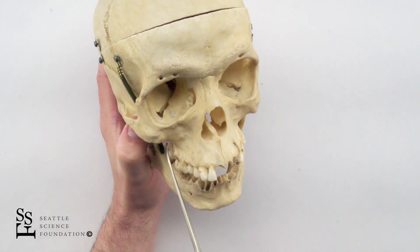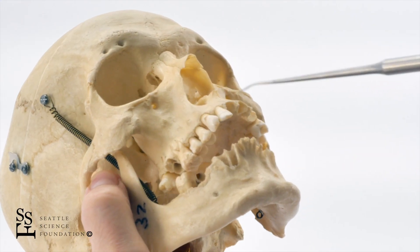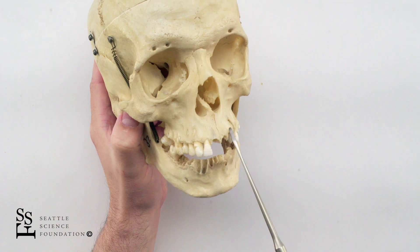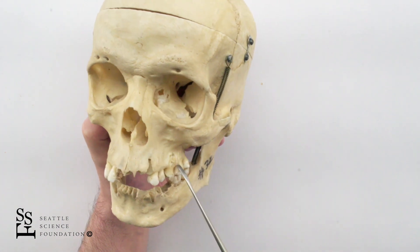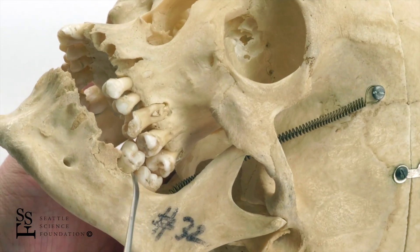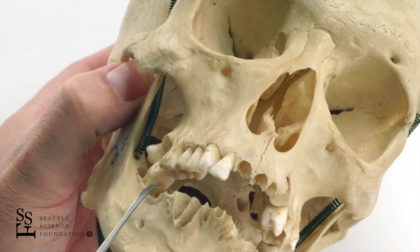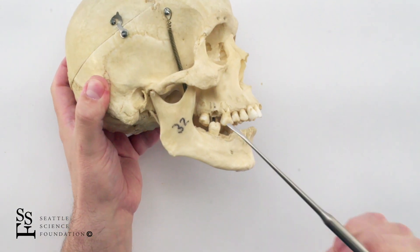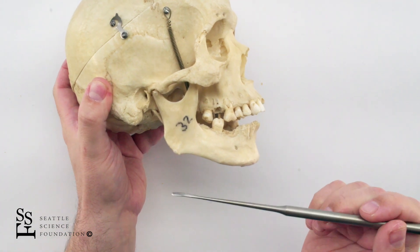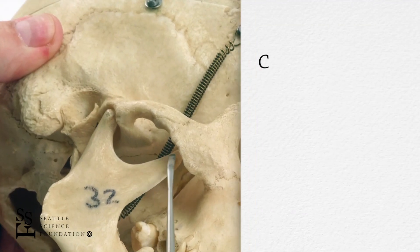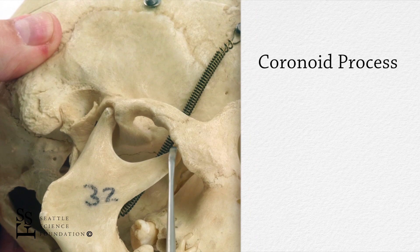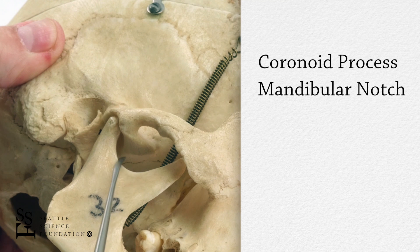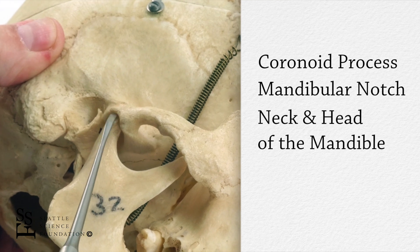We see the maxillary bone, left and right, which house the upper teeth. The mandible houses our lower teeth. A lateral projection of the skull shows us some of the larger features of the mandible: a coronoid process, a mandibular notch, and a neck and head of the mandible.